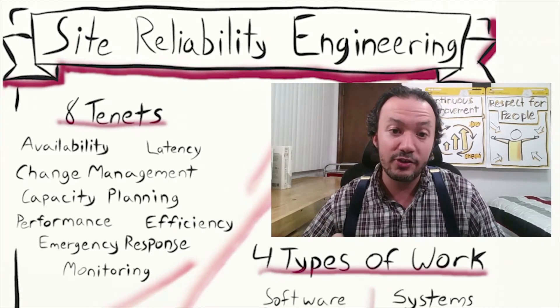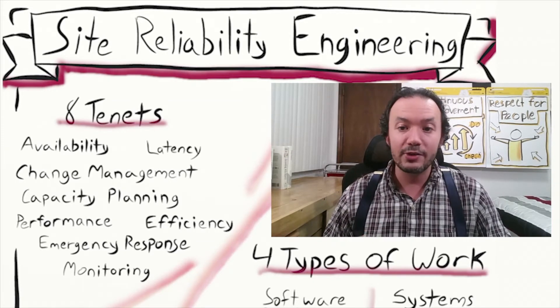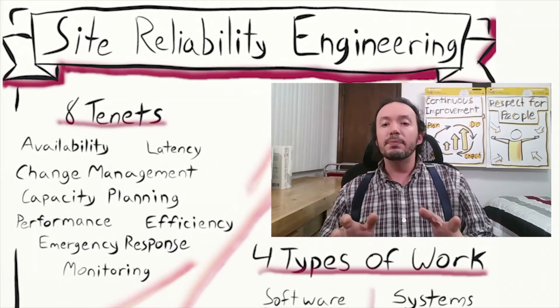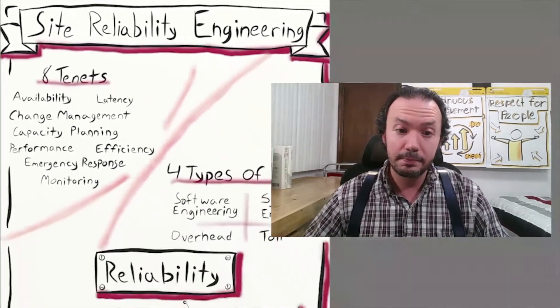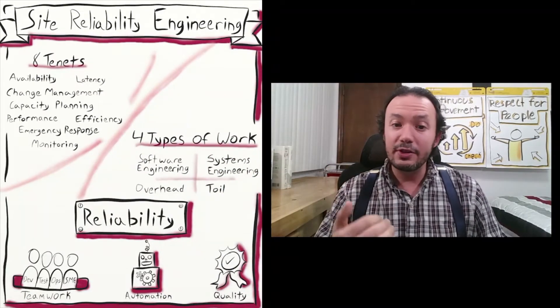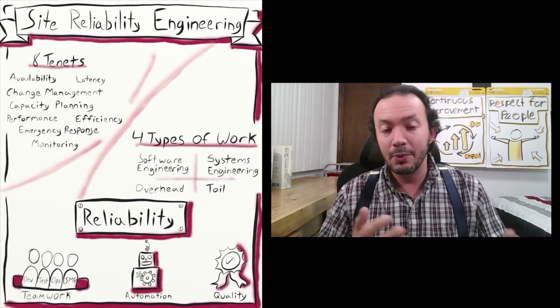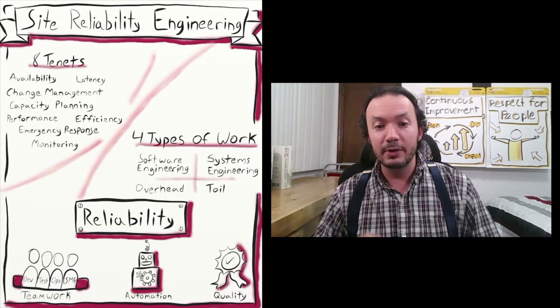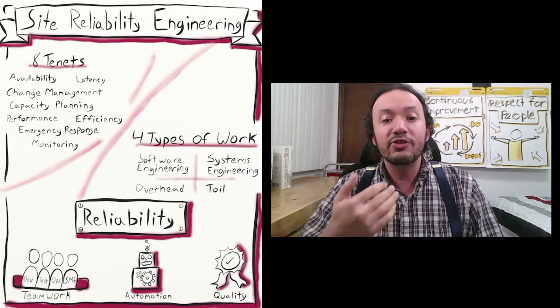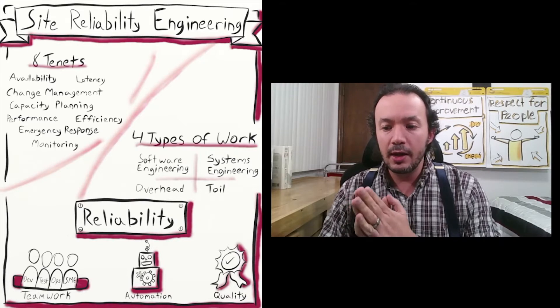Finally, we come to capacity planning. Capacity is critical to availability and performance — without being able to manage capacity, we can't effectively manage the reliability of the product. Treating all of these things — at their core they are non-functional requirements — as if they're functional requirements, treating them as a software problem, helps guide us down a human-friendly path. It makes our system more reliable, more predictable, and easier to operate so that our people can focus on adding value.